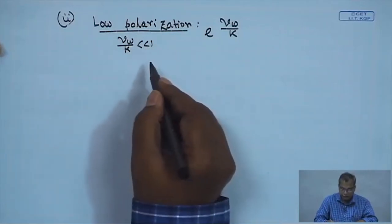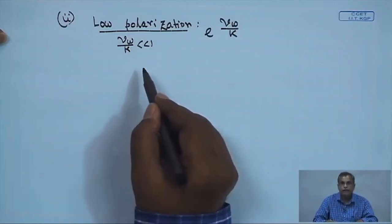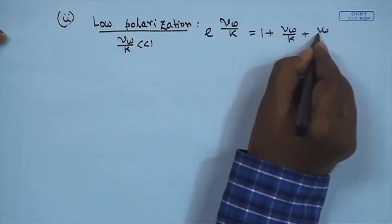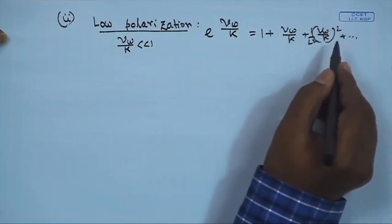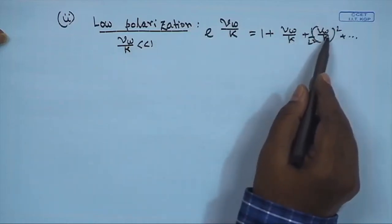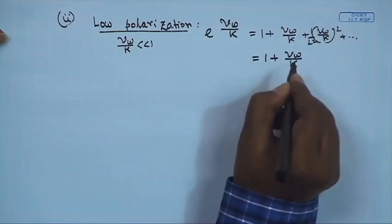When V_w/k is much less than 1, turbulence is quite high, so the Reynolds number will be very high and the mass transfer coefficient will be high compared to the permeate flux. This allows us to expand e to the power V_w/k as 1 plus V_w/k plus (V_w/k)^2 / 2! plus higher order terms. Since V_w/k is less than 1, the squared and higher order terms are neglected, and the expression is approximated as 1 plus V_w/k.